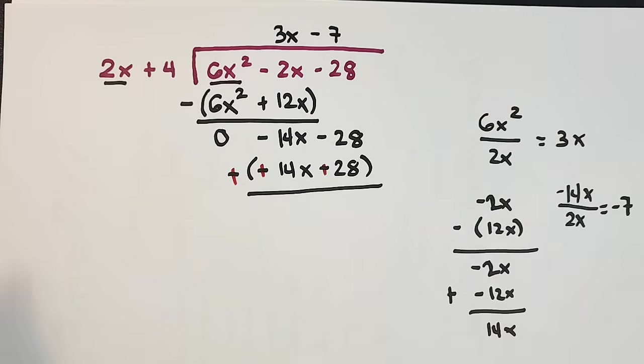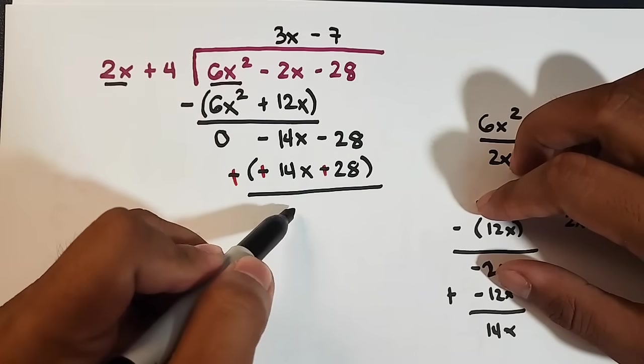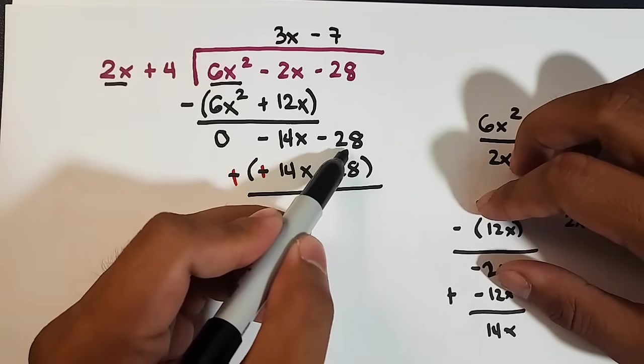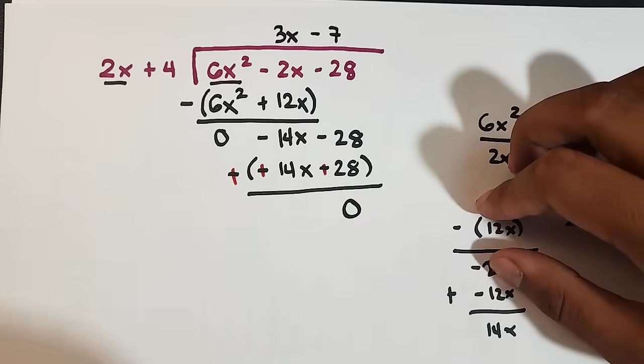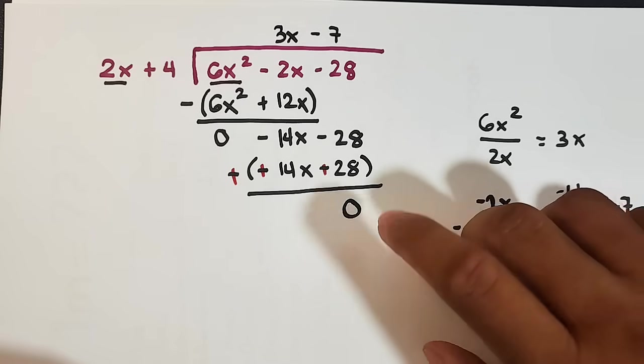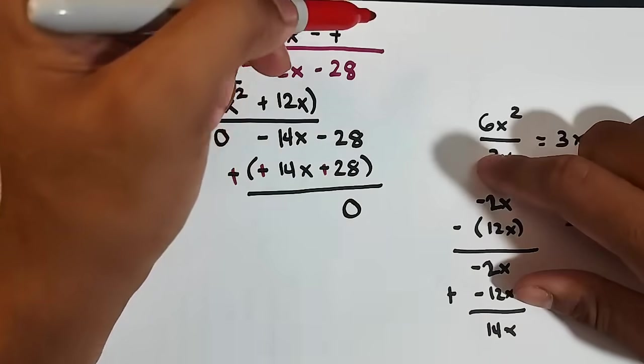So as you can see, negative 14x plus 14x. That's positive. So 0. Negative 28 plus positive 28. That is 0. So when we reach 0, we stop. That means, your remainder is 0. Again, your remainder is 0. And the quotient is this.